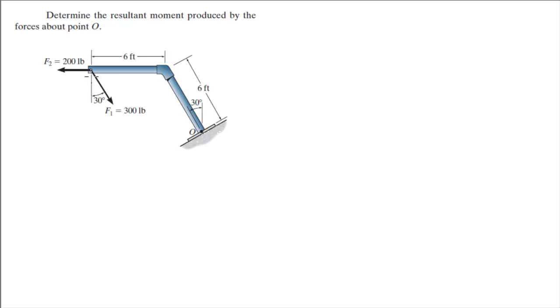So the first thing I want to do is figure out the X and Y components of F1. F2 is going straight to the left so it's pure X component. So basically I'm trying to figure out this component of the force and this component of the force. So the X component, the one going horizontally of F1, has a magnitude of 300 pounds times the sine of 30, which comes out to be 150 pounds.